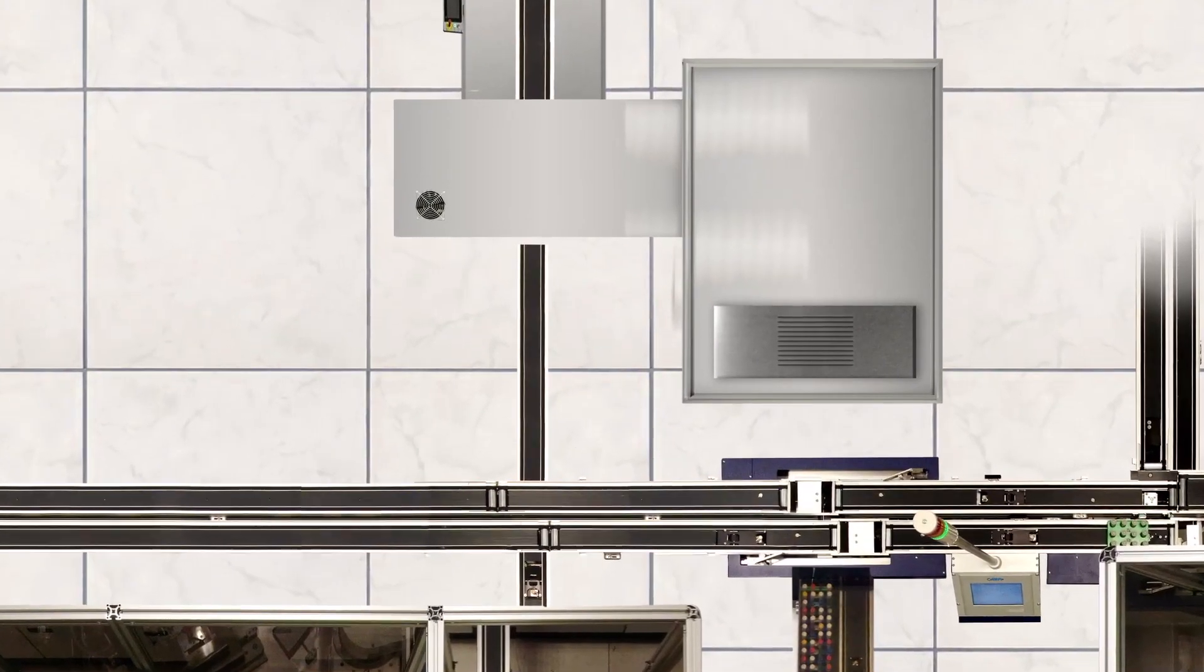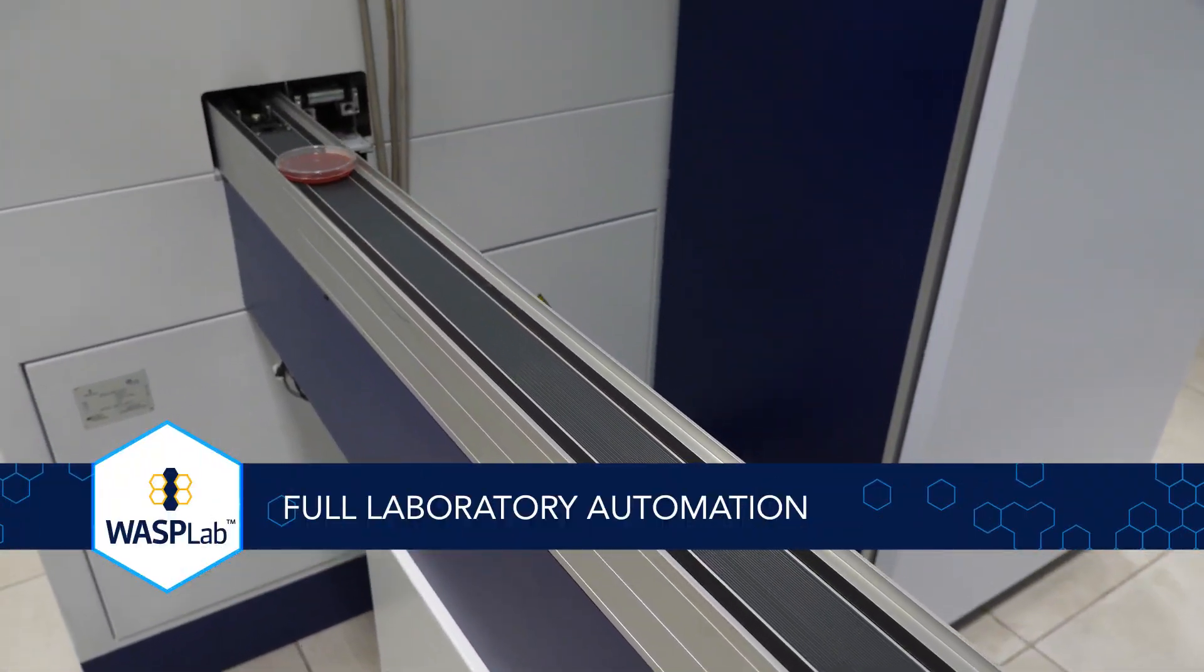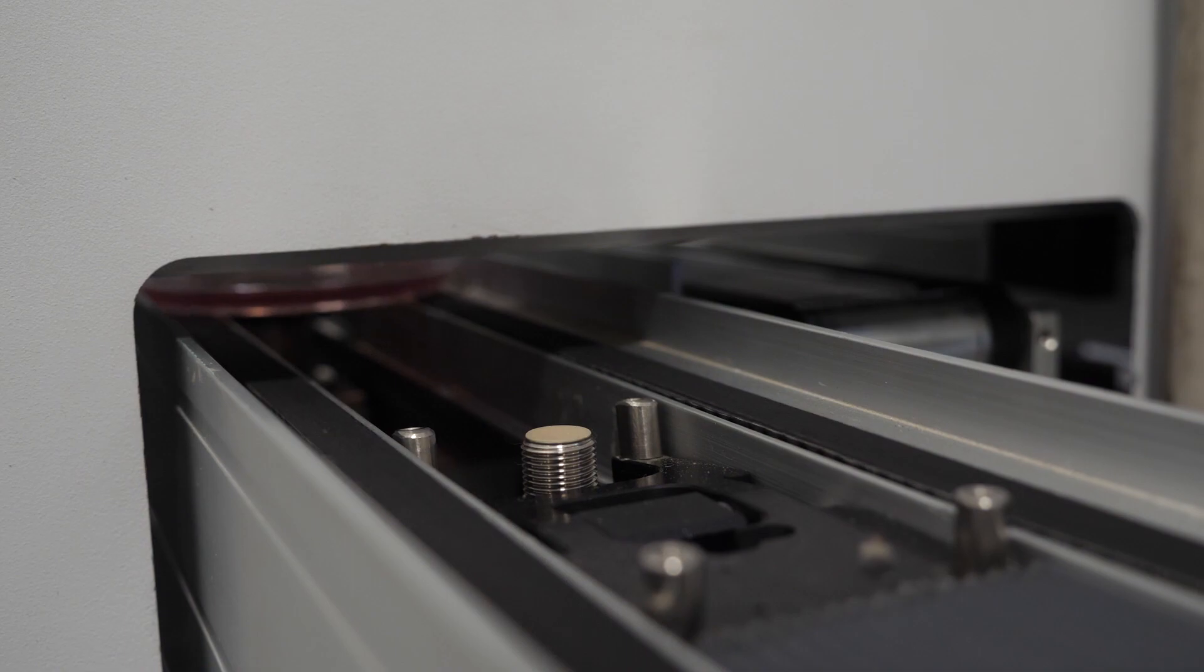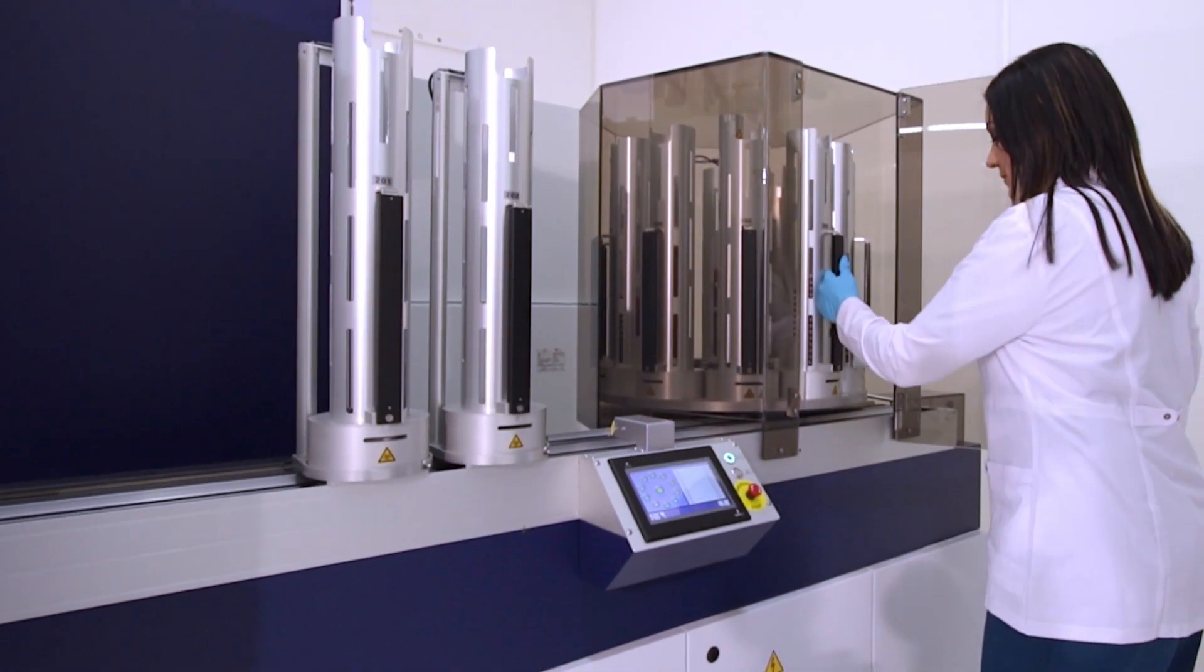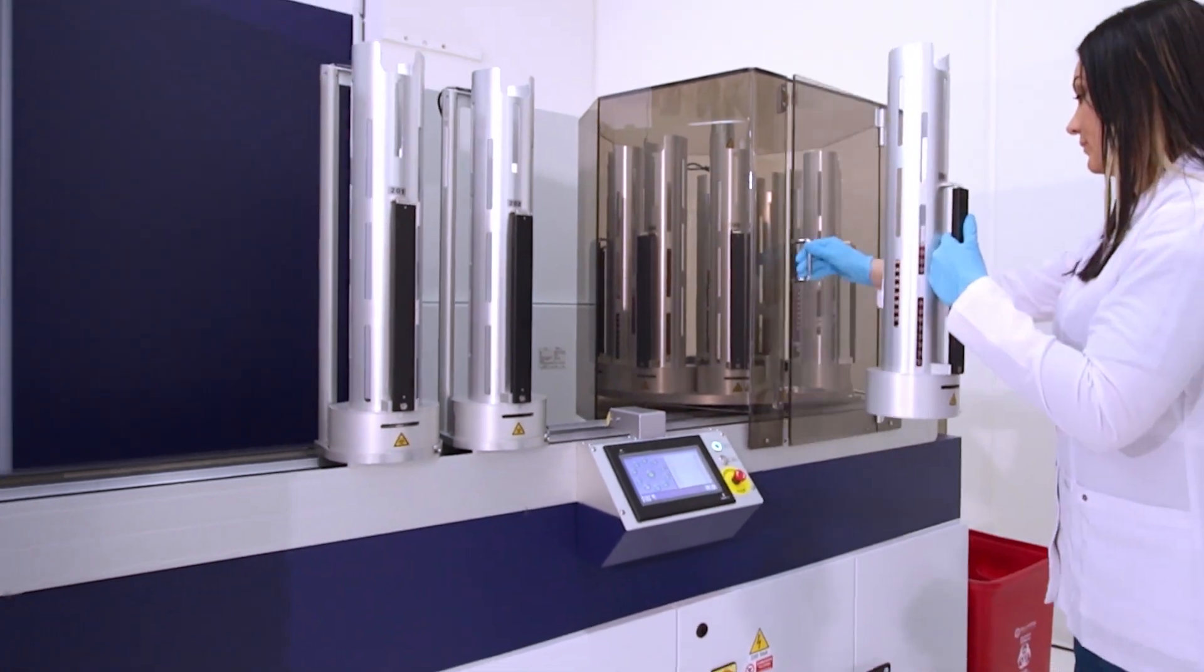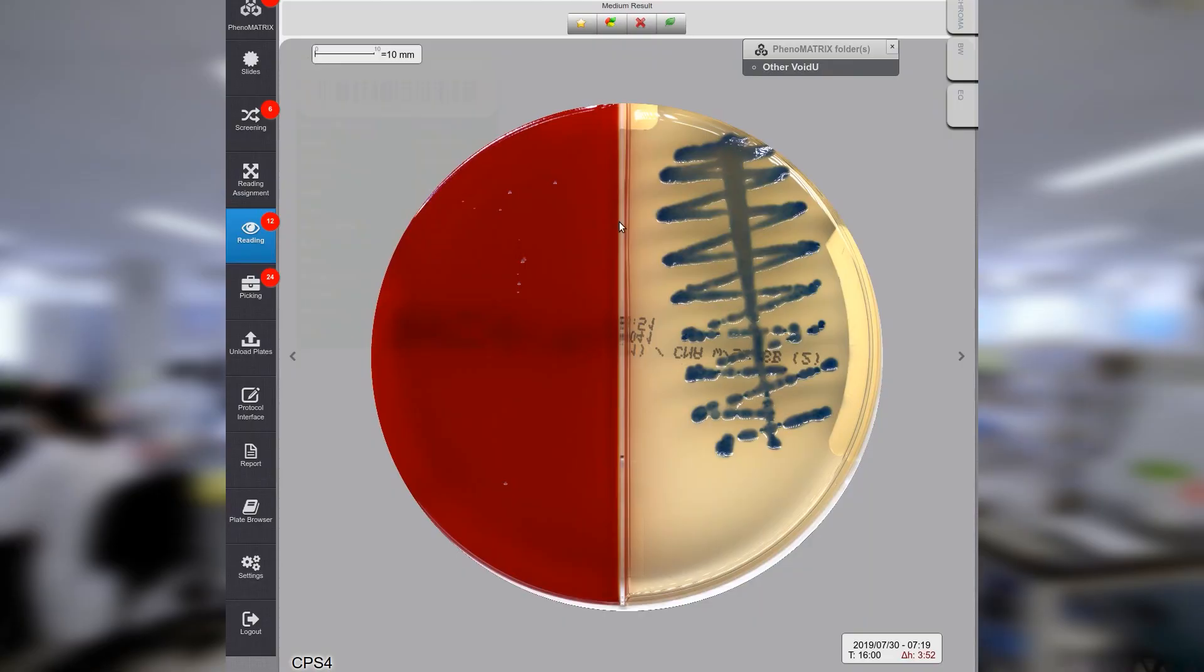Plates travel via conveyor from front-end processing to automatic incubation, digital imaging, and automatic interpretation. Using the manual loading carousel, laboratories may streak culture plates offline and then automate image acquisition and incubation.